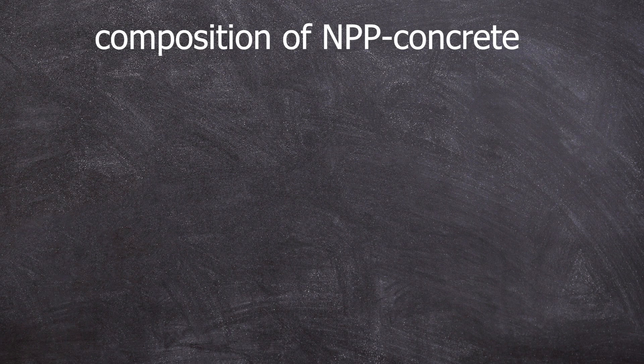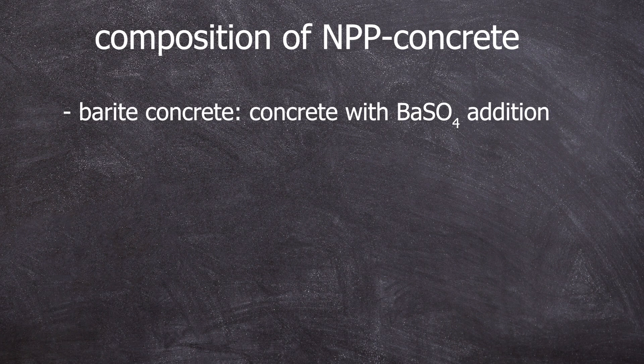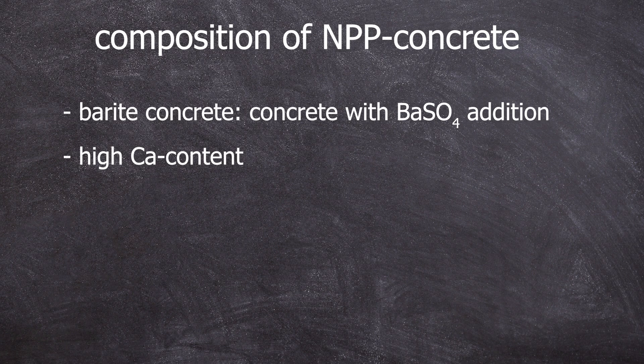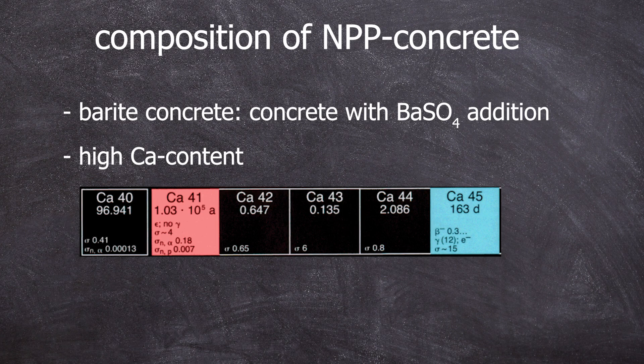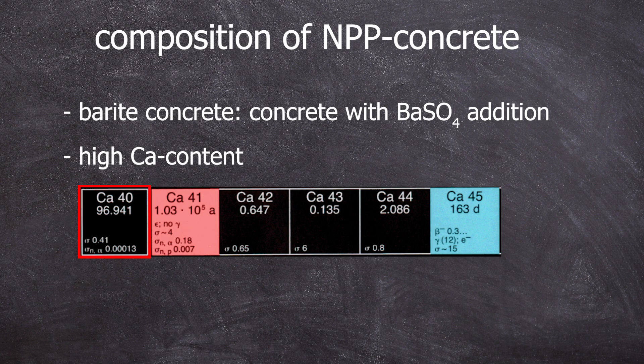But what makes this concrete radioactive in the first place? First of all, it's not ordinary concrete, but it's barite concrete, which means it contains an addition of barium sulfate. Concrete consists of calcium-containing compounds, and since it includes rocks, it also contains some transition elements. Calcium mostly exists as calcium-40. Through a neutron activation in an N-gamma reaction with a cross-section of approximately 0.4 barns, calcium-41, an electron-capture nuclide with a half-life of just over 100,000 years is produced.